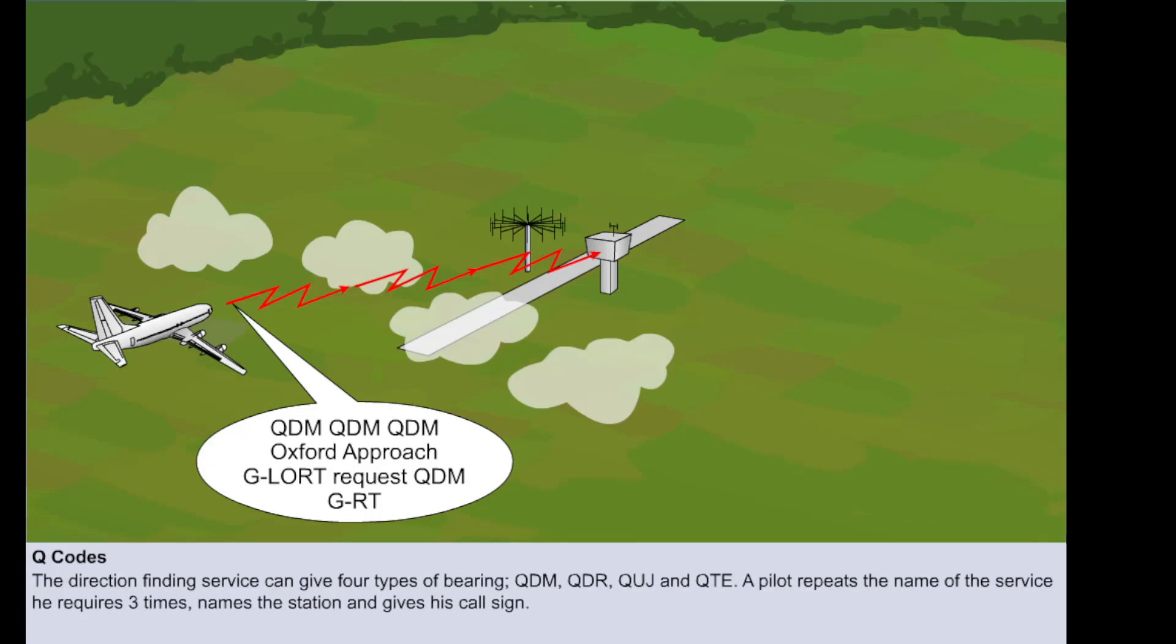When a pilot wishes to obtain a bearing from a ground station, he calls up on their frequency and requests the appropriate service. For example, the QDM would be requested when the pilot wished to fly a magnetic track to the station. He would say, Oxford Approach, Golf Lima Oscar Romeo Tango, request QDM, Golf Romeo Tango.